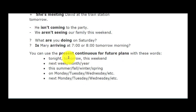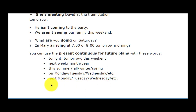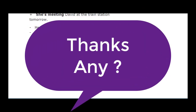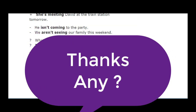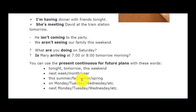These are the future time markers to use with present continuous for future plans: tonight, tomorrow, this weekend, next week, next month, this summer, this fall, this winter, and days like on Monday, Tuesday, Wednesday, next Monday, next Tuesday, next Wednesday, etc. These signal words show future time and make the context clear. That's all for the lecture — thank you for watching.